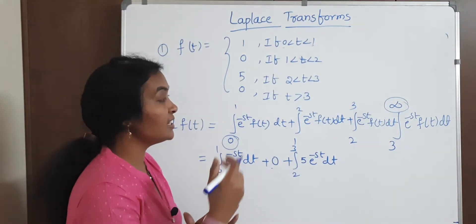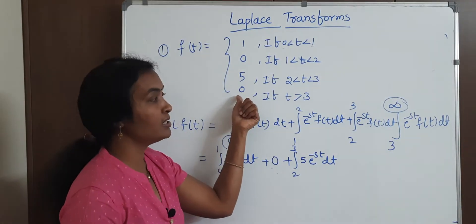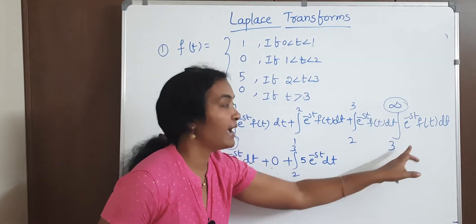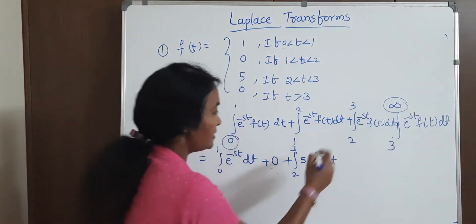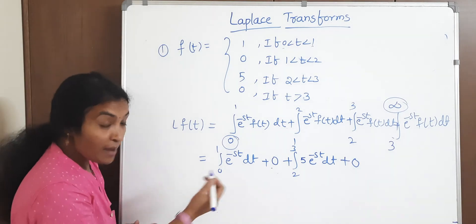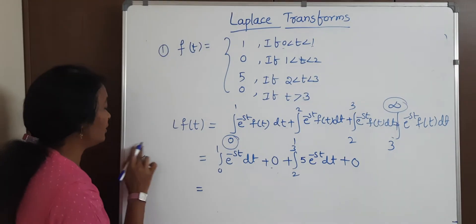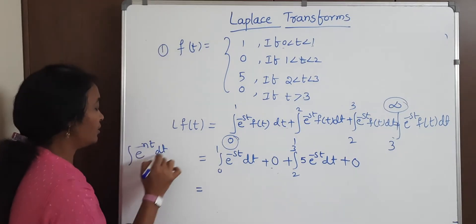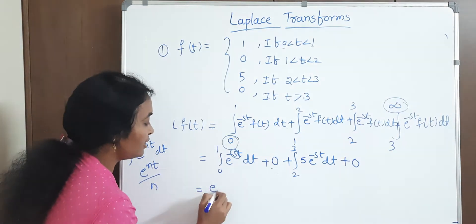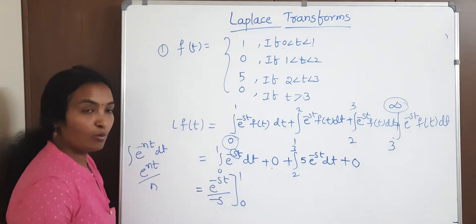We only need to solve the non-zero terms. Applying our integration principle: the integral of e to the power of nt is e to the power of nt divided by n. Here n is minus s, so the integral of e to the power of minus st is e to the power of minus st divided by minus s. The first term has limits 0 to 1. The second surviving term is 5 times e to the power of minus st divided by minus s with limits 2 to 3.